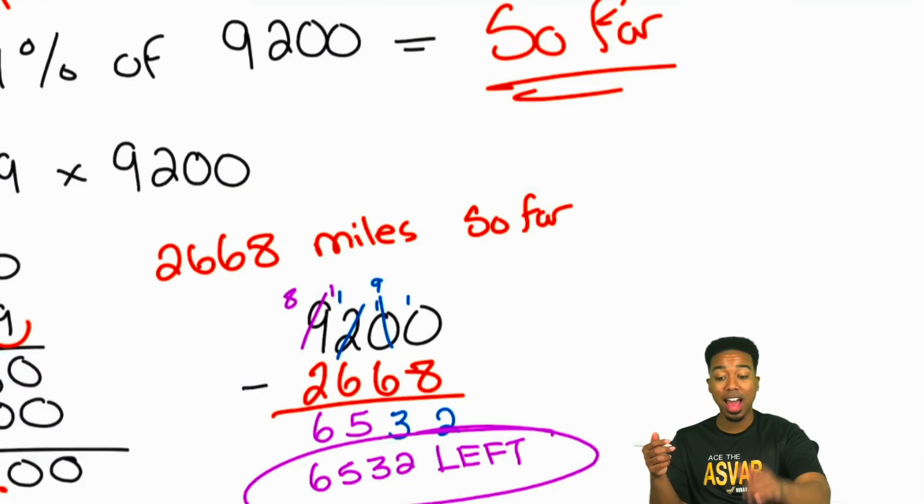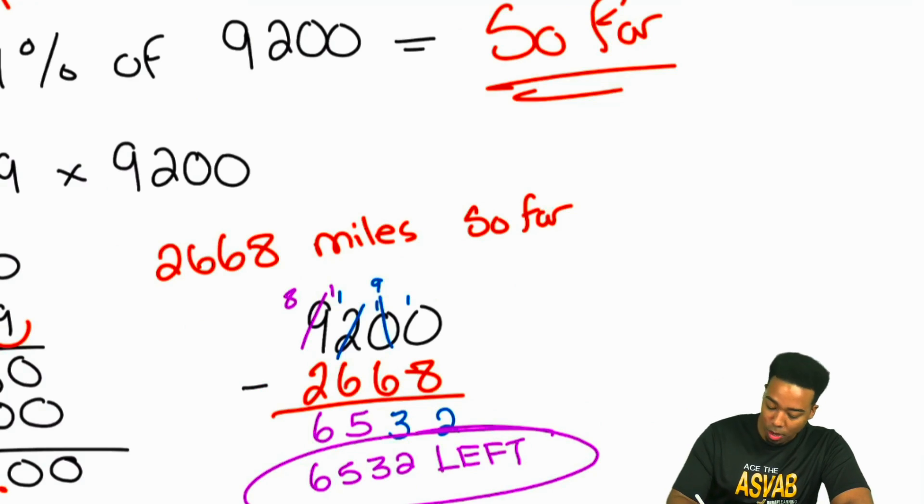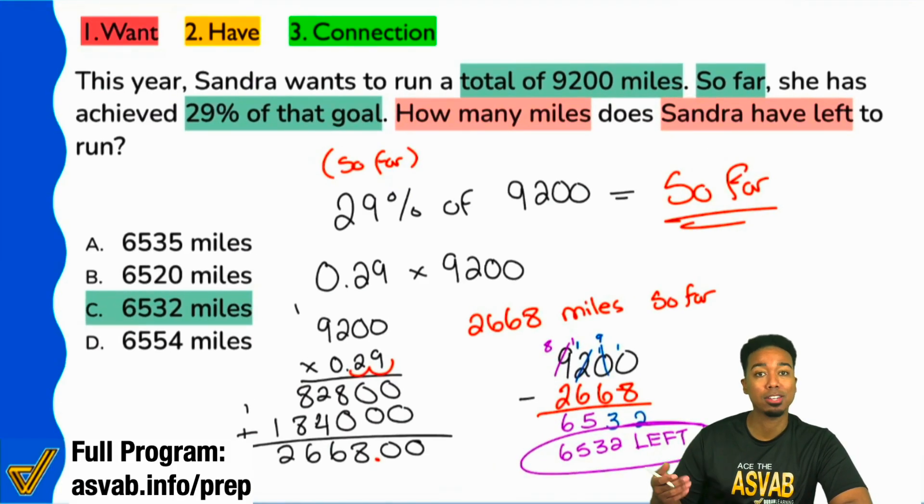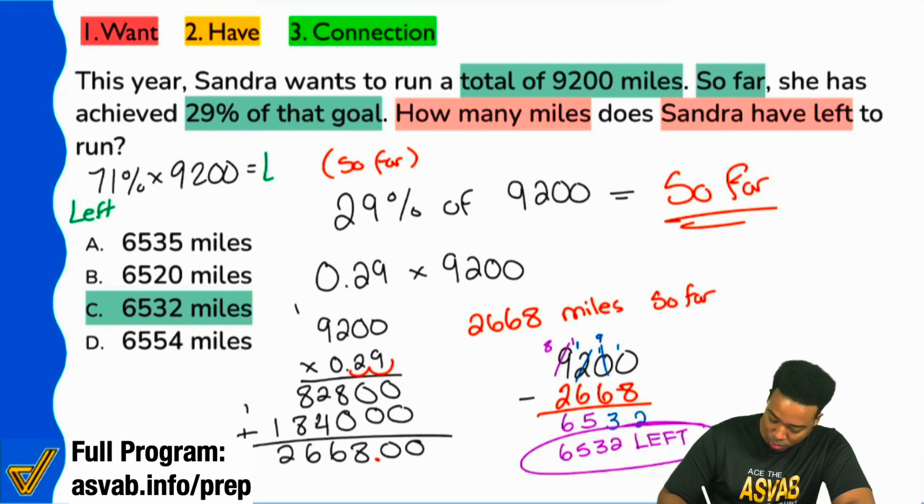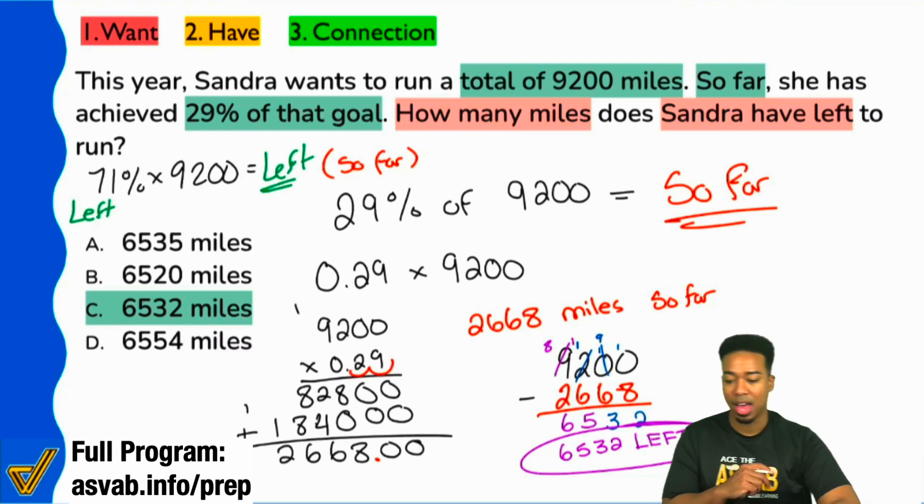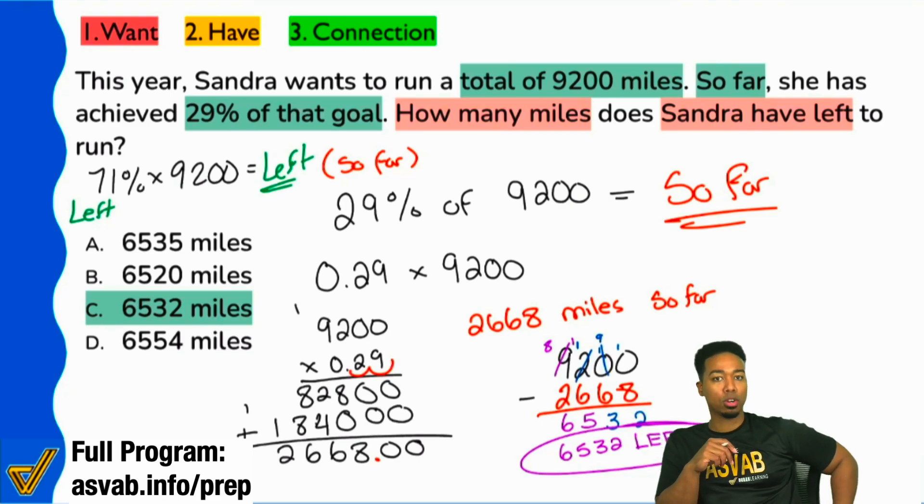The other way to do this would be to set this up with 100% minus 29%, which would end up being 71%. 71%, that represents what's left. And you can do 71% of 9,200, and that would give you the answer, what's left. That absolutely would have worked too.